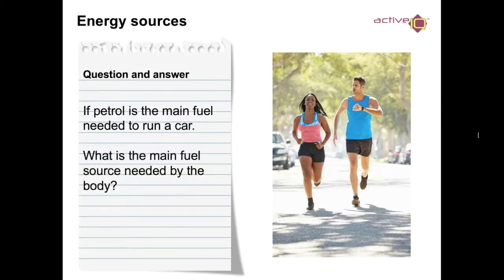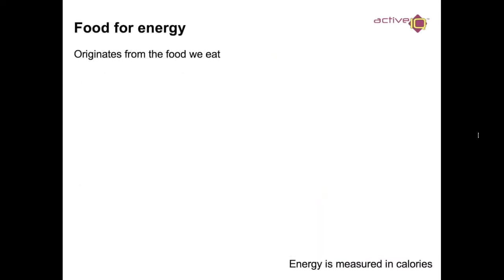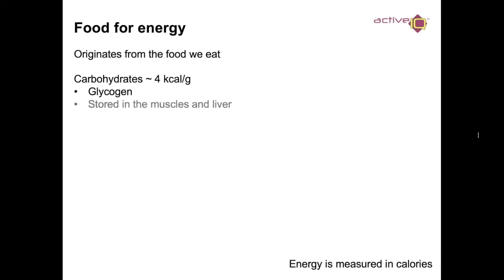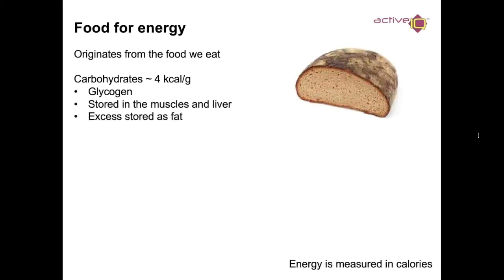Quick question: if petrol is the main fuel needed to run a car, what is the main fuel source needed by the body? So food for energy. We have carbohydrates, which equals four calories per gram. Carbohydrates can be found in glycogen, stored in the muscle and liver. Excess is stored as fat.